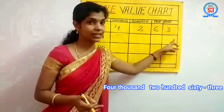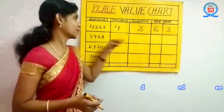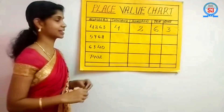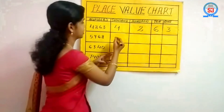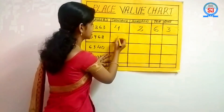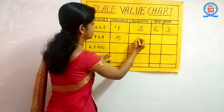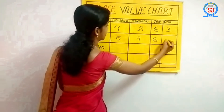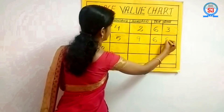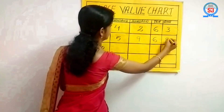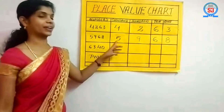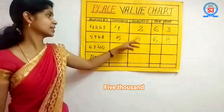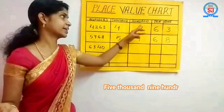Now let's read the next number. I will write 5, 9, 6, 8. Five thousand, nine hundred — and how will we read? Five thousand nine hundred...